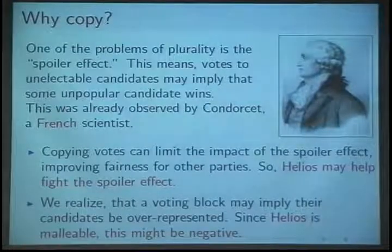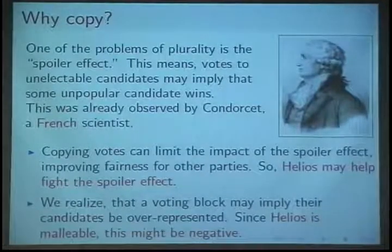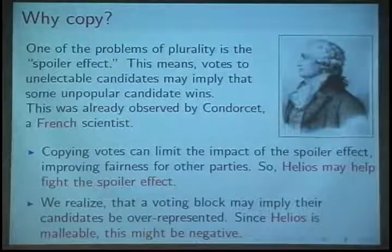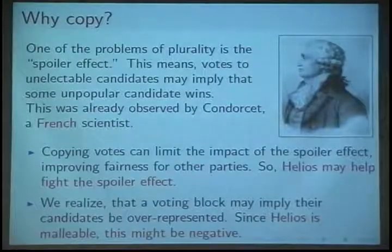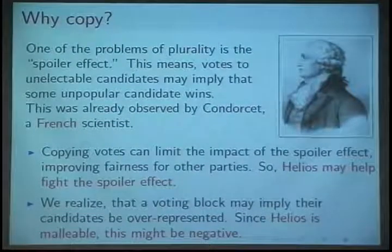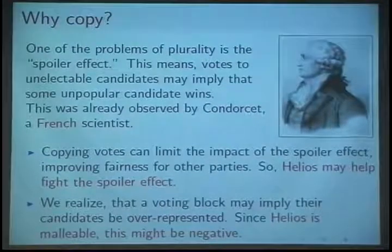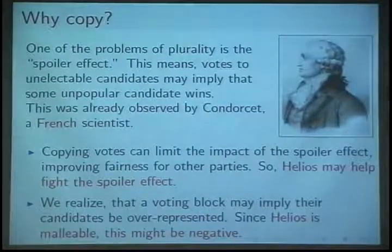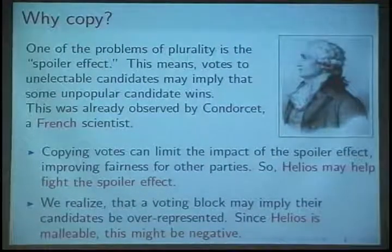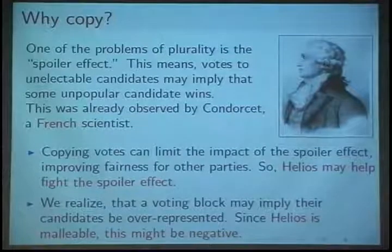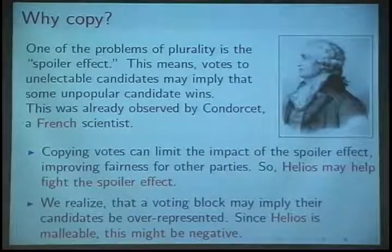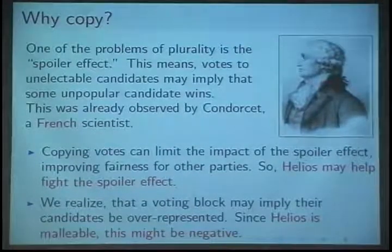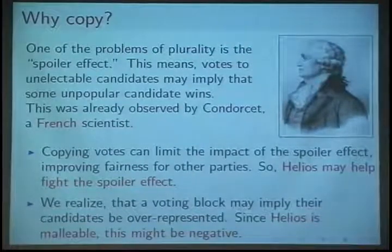The first question you could ask is: why do you want to copy? One of the problems with plurality voting, which ISCR uses, is a spoiler effect. That means if you nominate many candidates, you're going to get votes to unelectable candidates, and it may imply that some unpopular candidate wins. This was already observed by a French scientist called Condorcet. So copying votes can actually limit the impact of a spoiler effect, improving fairness to other parties.